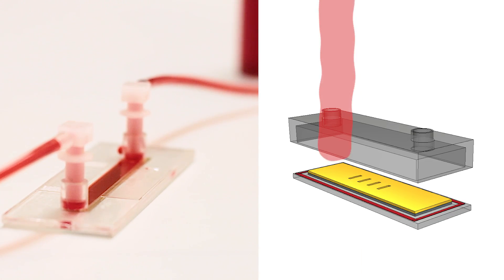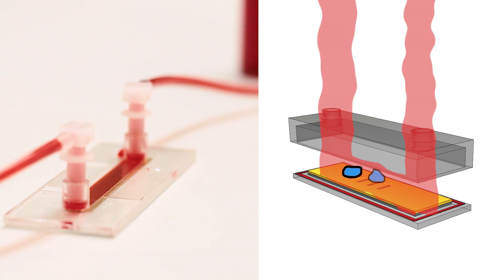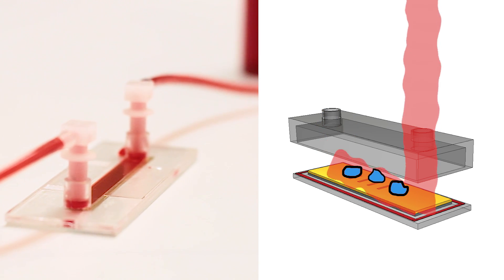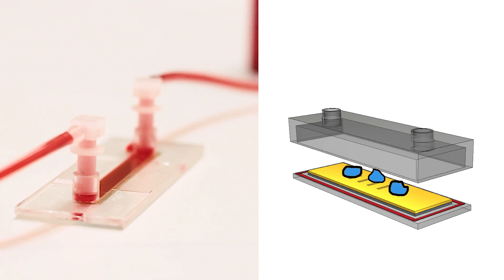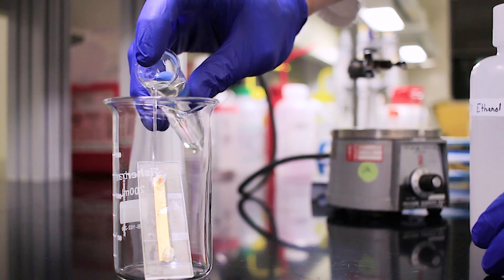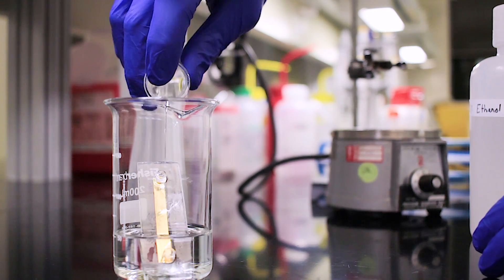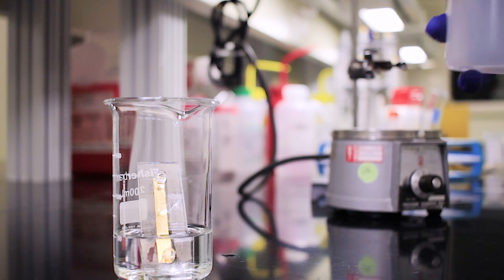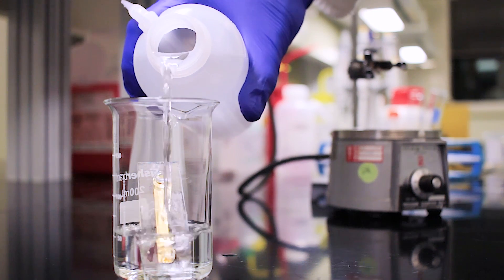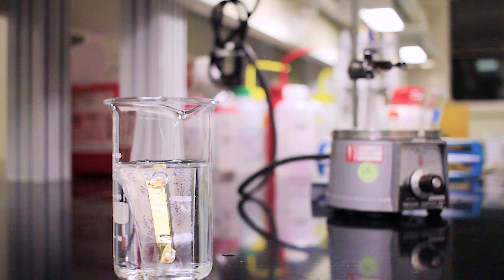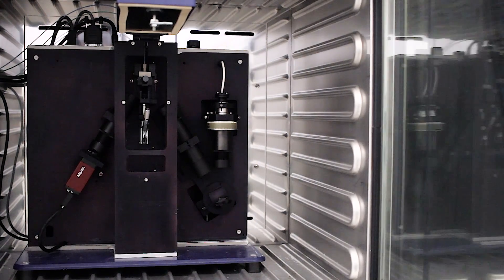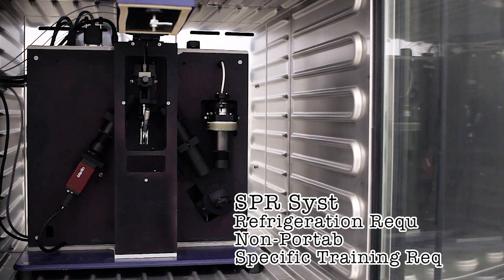Of the established analytical techniques, surface plasmon resonance or SPR is the best contender to give real-time label-free detection. This technique uses a laser to make electrons dance on a metal film. How they dance can give some insight into the sample passed over the surface. The technique is very sensitive but requires a laser, fancy optics, and refrigeration, yielding a large expensive instrument.